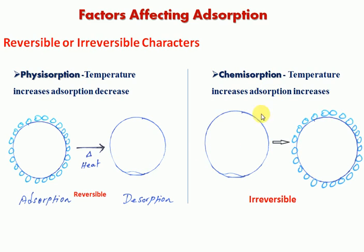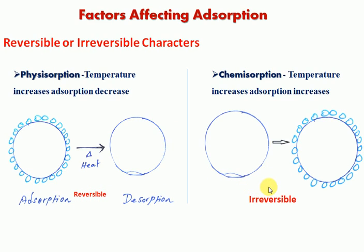In chemisorption, when temperature increases, adsorption also increases due to the formation of a new compound on the solid surface. As temperature increases, new compound formation occurs and adsorption also increases. Chemisorption involves irreversible reactions. Once a new compound is formed on the solid surface through strong chemical bond formation, the reaction is irreversible.